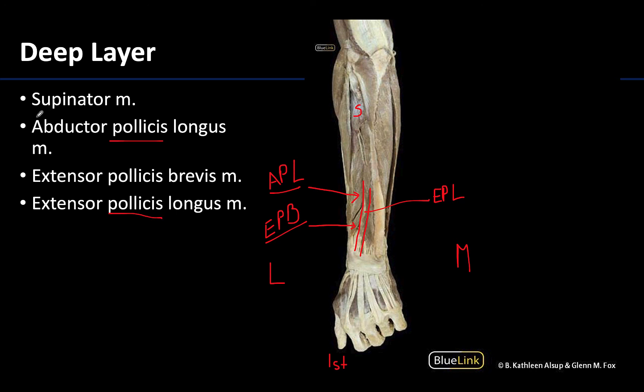The tendons of these three muscles form the boundaries of the anatomical snuff box, which we will discuss in another video. Basically in that region you will have a visible depression when looking at the skin, with contents like the radial artery inside. The posterior compartment of the forearm is the most difficult muscle compartment mainly due to the number of muscles, so it's okay if it feels overwhelming. Take your time to review, and reach out with any questions. I hope you have a great rest of your day.